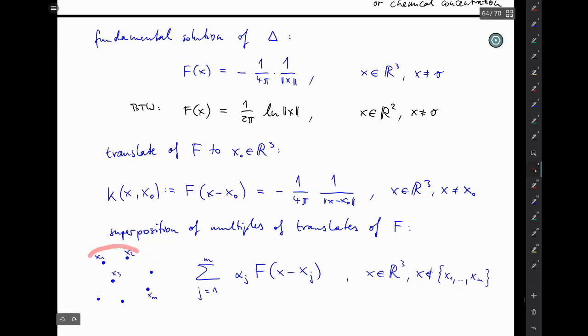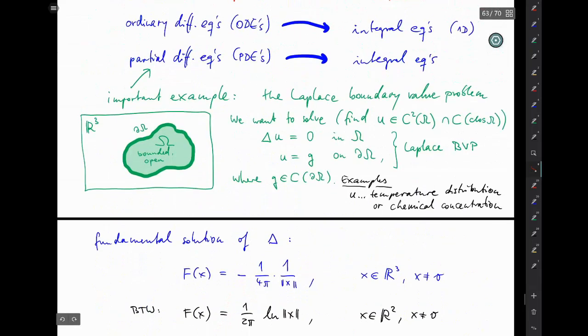And instead of finitely many you could even take infinitely many. And you could take so many that you cannot use the summation anymore but instead need an integral. And then it's only up to you to choose the little alphas right in order for your function to also meet this condition here.